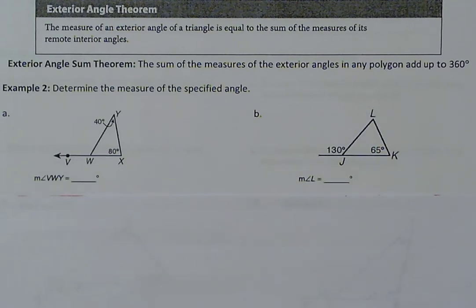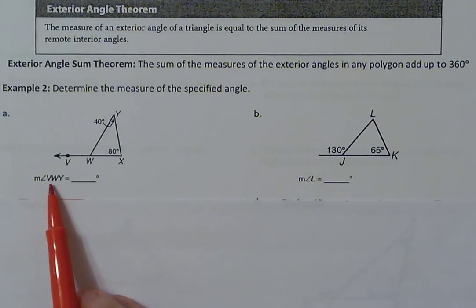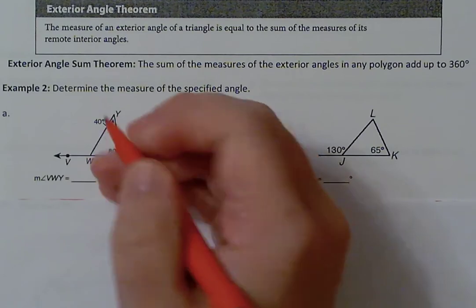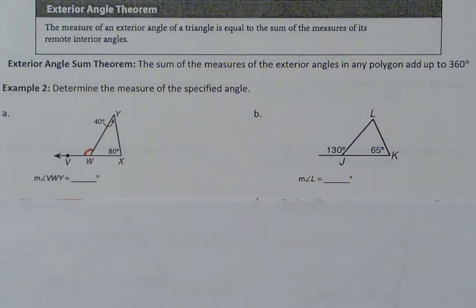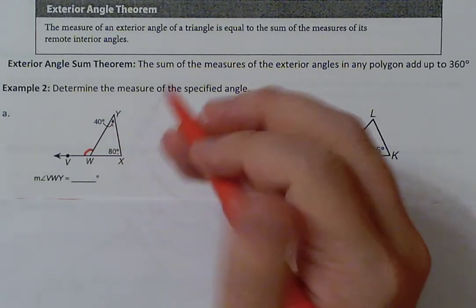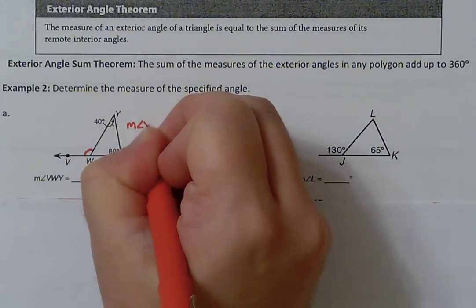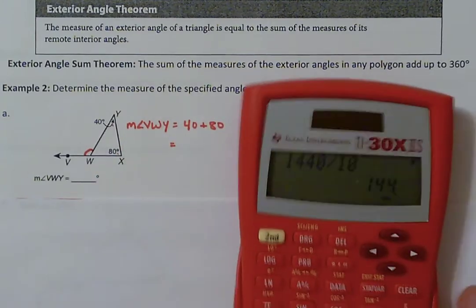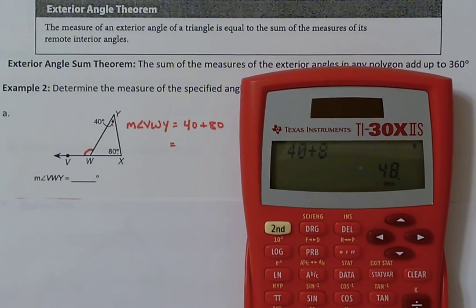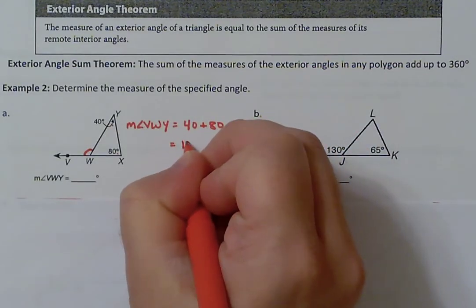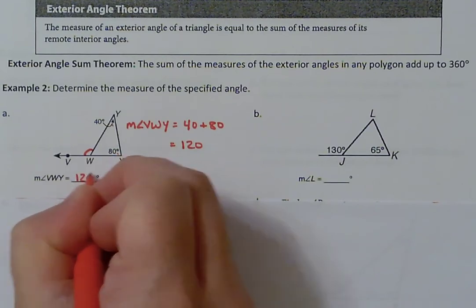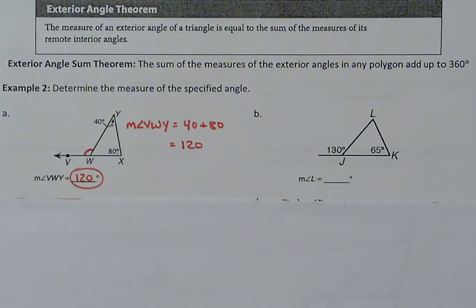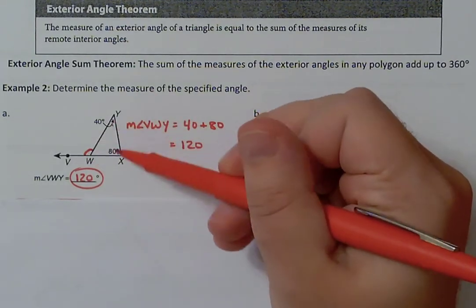For example 3, part A: they want us to figure out the measure of angle VWY, which is the exterior angle. The exterior angle equals the sum of the remote interior, so that's 40 plus 80. The measure of angle VWY equals 40 plus 80, which gives us 120 degrees. So if they ask for the measure of the exterior angle, take the remote interior angles and add them together.